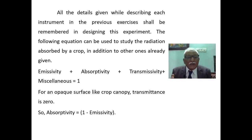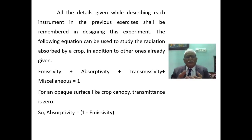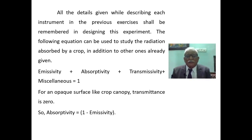What is the radiation equation? Simple: emissivity plus absorptivity plus transmissivity plus miscellaneous equals 1. Otherwise, emissivity, absorptivity, and transmissivity together must equal 1 — that equality is important.